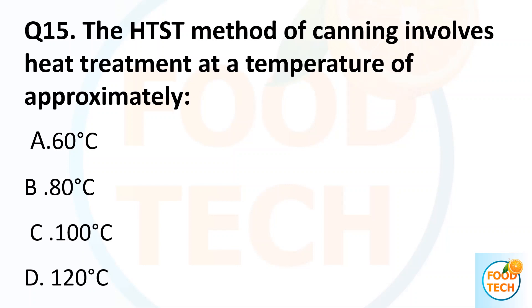Question 50. The HTST method of canning involved heat treatment at a temperature of approximately: A. 16 degrees Celsius. B. 80 degrees Celsius. C. 100 degrees Celsius. D. 120 degrees Celsius. Answer D. 120 degrees Celsius.